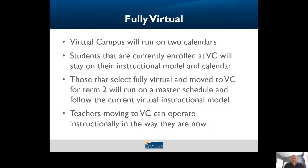Our first model is the fully virtual model. If you choose the fully virtual model on your registration form, you will not have much change from the current virtual model that you experience. Your student will be enrolled in virtual campus as well as the home school. For example, if you are a Hoover Husky currently and you choose the fully virtual model, you will stay at Hoover Husky, but part of your enrollment will also be at virtual campus. This allows us to serve your student the same way they are currently being served, which is having access to a teacher online five days a week in both synchronous — which means live — and asynchronous — which is on their own — instruction for five days a week.